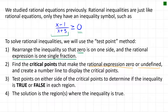Critical points include x-values that are not allowed because they would make the denominator equal zero — that makes the rational expression undefined. We then test points on either side of the critical points to figure out where the inequality is true or false. The solution is where the regions are true, and we combine multiple true regions together.